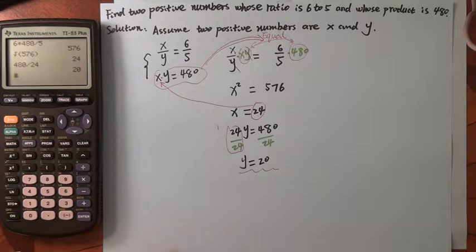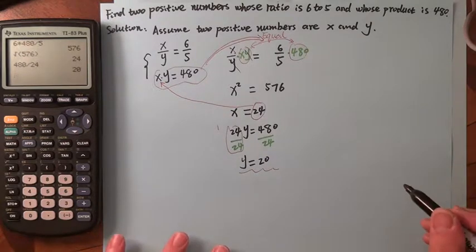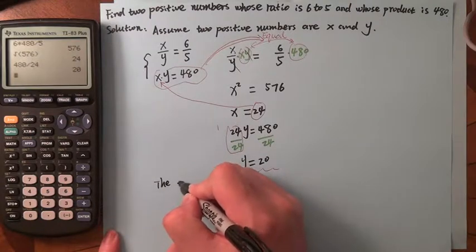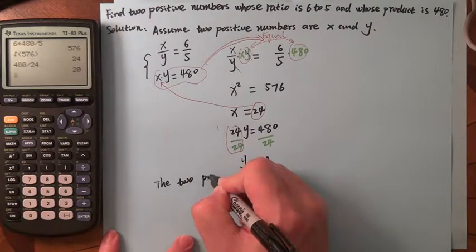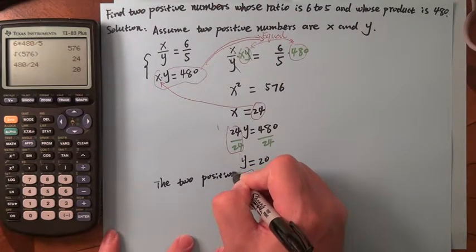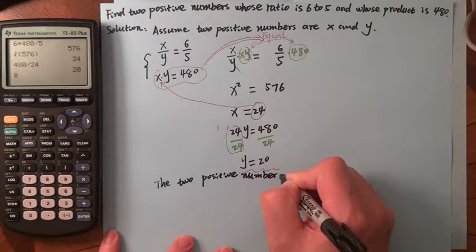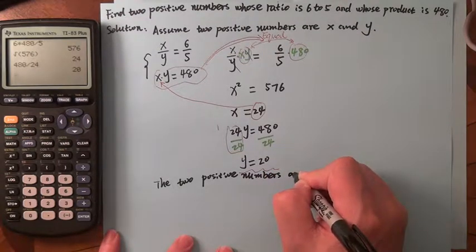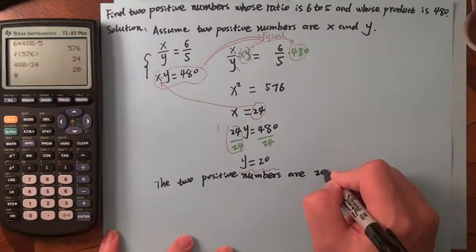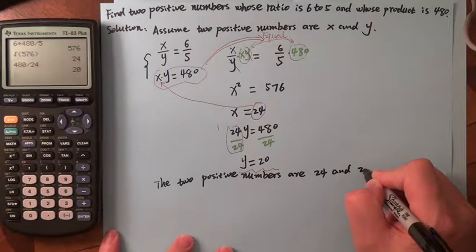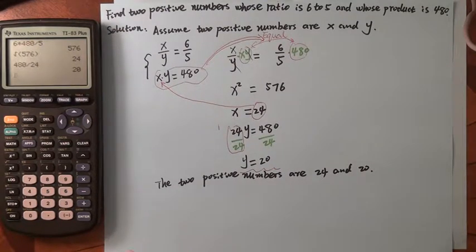So you have the solution. You may answer: the two positive numbers are 24 and 20. That's it. Please review this lecture. I'll see you next time.